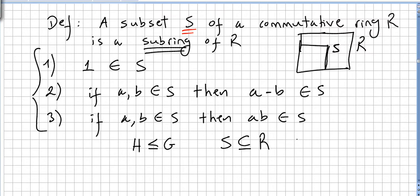If you want a sub-ring of R to be a proper sub-ring, you don't want S to be equal to R. This notation means that S is a sub-ring of R and S is not the ring.